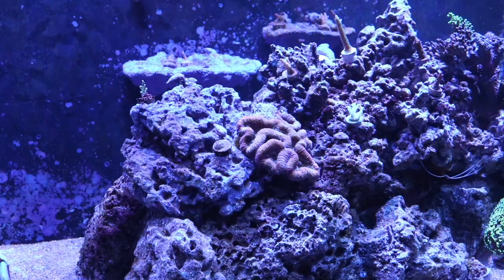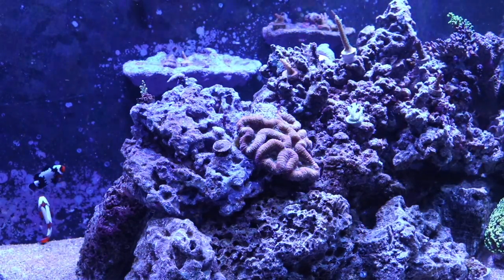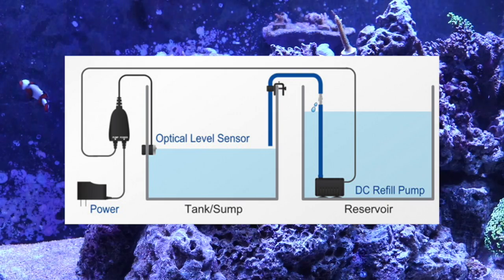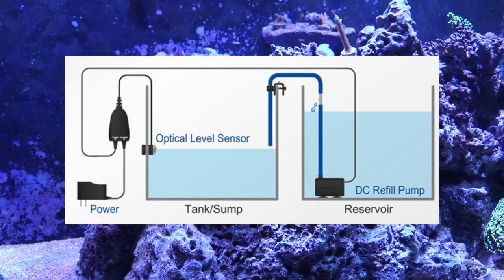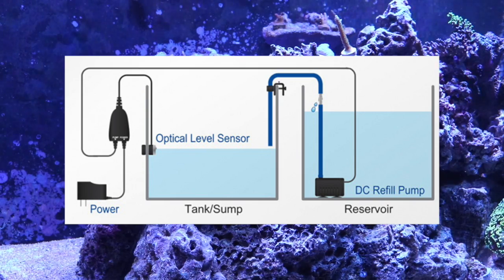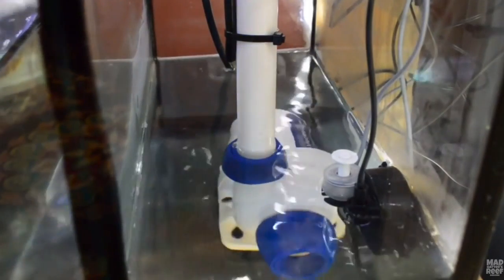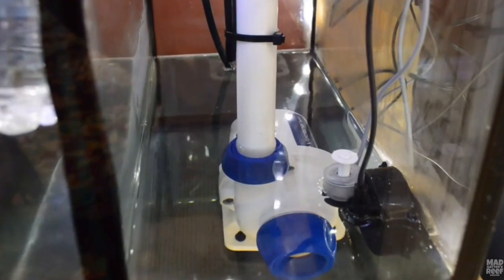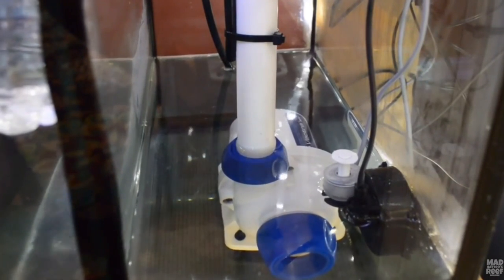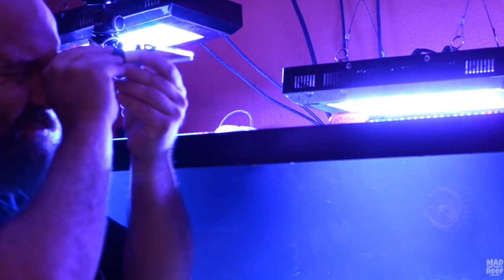An auto top-off is one of the most important pieces of equipment that will change your reef keeping life. Essentially, it's a small computer that constantly reads the water level in a chamber of your sump — or even the display tank — via a float switch or optical level sensor. Once the water level drops, it kicks on a pump and adds fresh water from a reservoir into your sump, resulting in very small fluctuations in your tank's salinity.